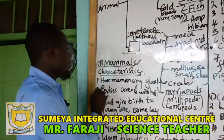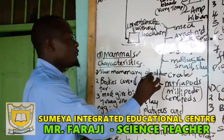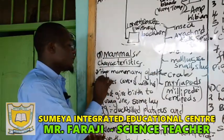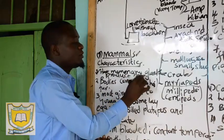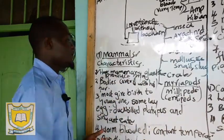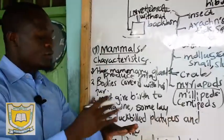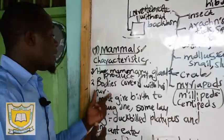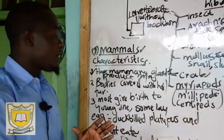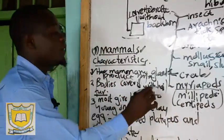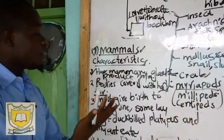Mammals have mammary glands — meaning they produce milk. If animals produce milk, we classify them as mammals. When we look at body covering, all mammals have their bodies covered with either fur or hair.